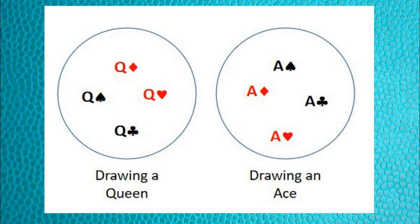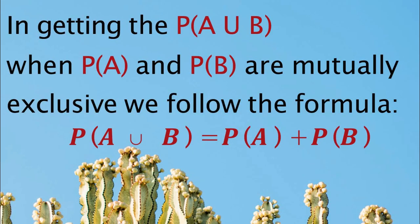Let us illustrate the two events using a Venn diagram. Our first event is drawing a queen and the second event is drawing an ace. Observe the elements or outcomes — do you see any common elements? If there are no common outcomes, this is said to be mutually exclusive events. In getting P(A∪B) when P(A) and P(B) are mutually exclusive, we follow a formula.